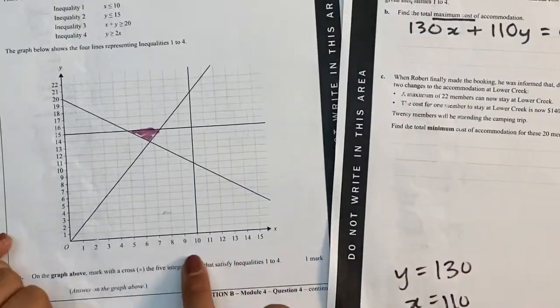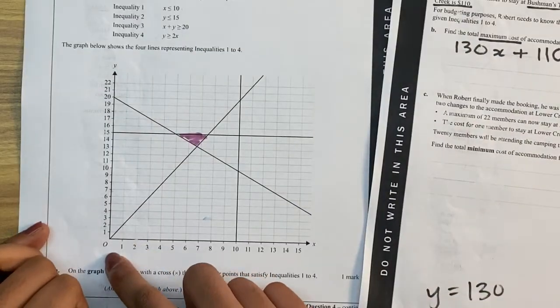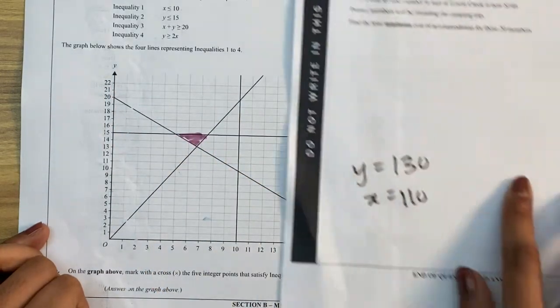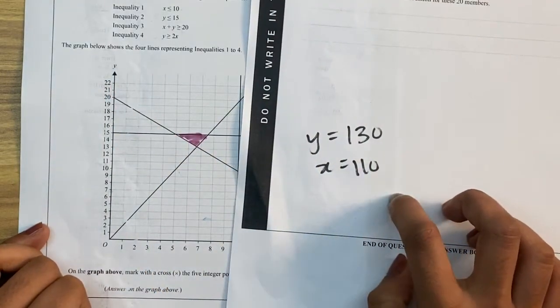Now obviously on my graph, if you look here, the y only goes up to 22, and the x only goes up to 15. But my intercepts are in the hundreds. So what am I going to do?